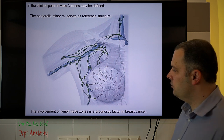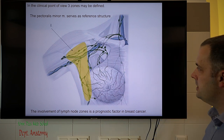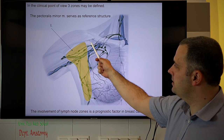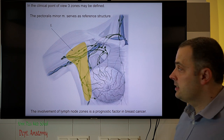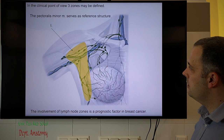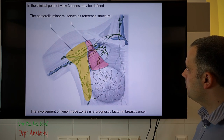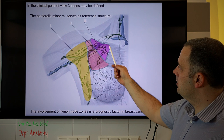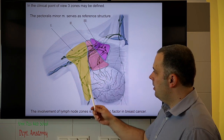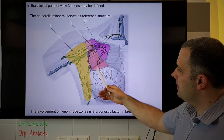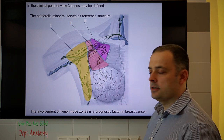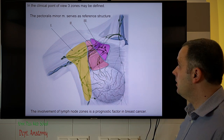Clinicians divide the axillary lymph nodes into three zones using the pectoralis minor muscle as a landmark. Zone one is lateral to the muscle, zone two is behind the muscle, and zone three is medial and superior to it. When breast cancer develops, clinicians always examine these lymph nodes, and which group is affected is an important prognostic factor.